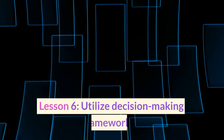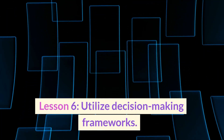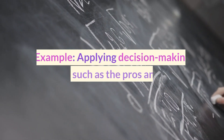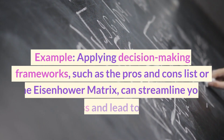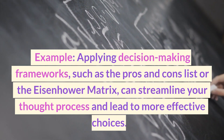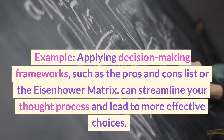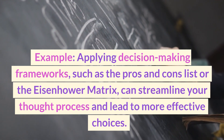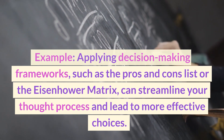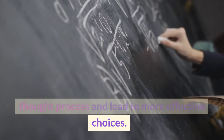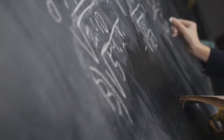Lesson 6: Utilize decision-making frameworks. Applying decision-making frameworks such as the pros and cons list or the Eisenhower matrix can streamline your thought process and lead to more effective choices.